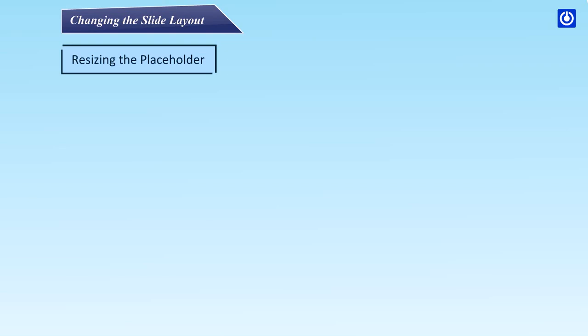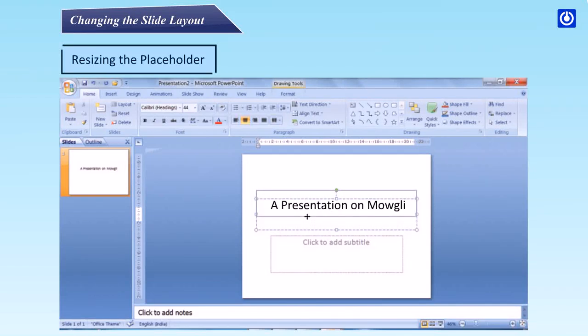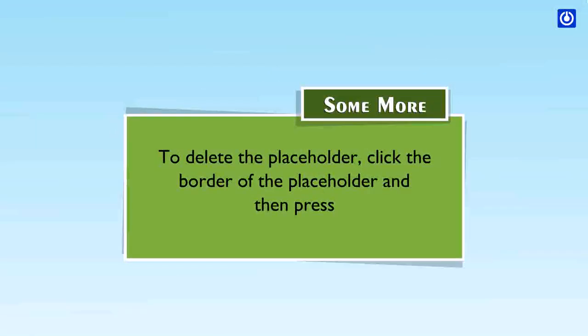Resizing the placeholder: Step 1 – Click on the placeholder; a border will appear. Step 2 – Position the pointer on the border. When it changes shape, drag the mouse to resize the placeholder. Step 3 – Release the mouse button as the placeholder resizes. To delete the placeholder, click the border of the placeholder and then press Delete.